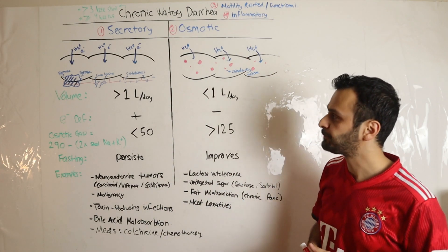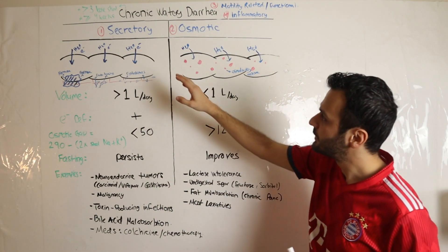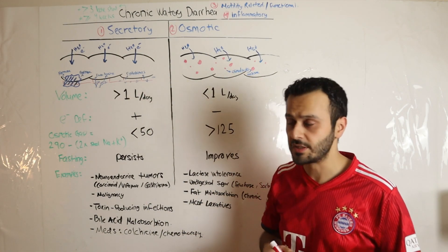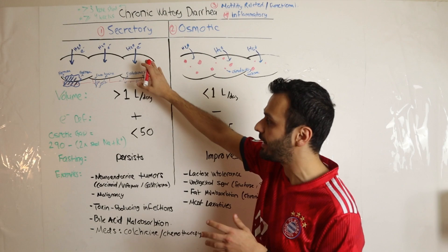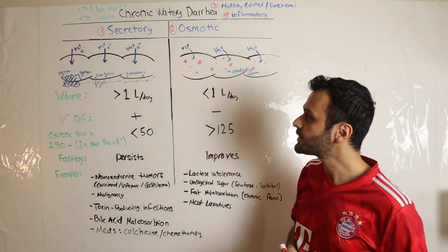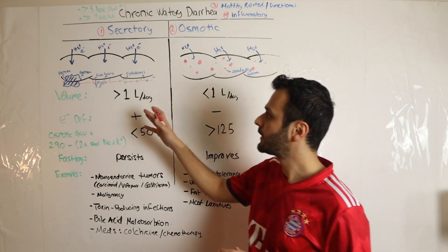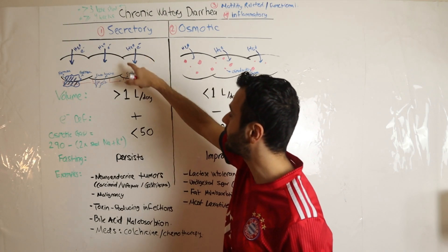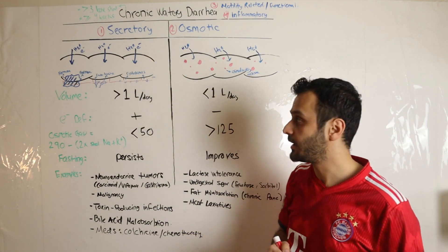Let's first talk about secretory diarrhea. We'll talk about the pathogenesis because once you make sense of the pathogenesis, everything else will make sense to you. In secretory diarrhea, you will have this constant secretion of both water and electrolytes into the lumen of the GI tract.